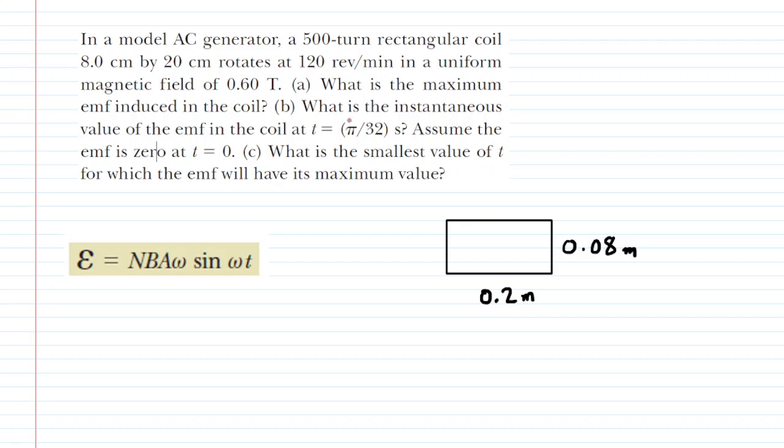In this question we have an AC generator, and in part A we are asked to determine the maximum EMF that is induced in the coil. The equation that gives EMF as a function of time for an AC generator is shown here in the box, and we notice that equation contains a sine term right here. If you're trying to maximize the EMF, you're going to have to maximize that sine term. We know from mathematics that the maximum value of a sine function is simply equal to 1, so we're going to replace that circled sine term with 1.